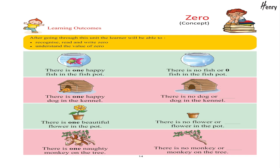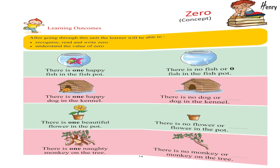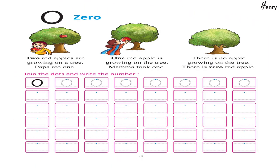There is one happy dog in the kennel. There is one beautiful flower in the pot; there is no flower — zero — in the pot. There is one naughty monkey on the tree; there is no monkey — zero — on the tree. Two red apples are growing on a tree. Papa ate one; one red apple is growing on the tree. Mama took one; there is no apple — zero red apples — growing on the tree.